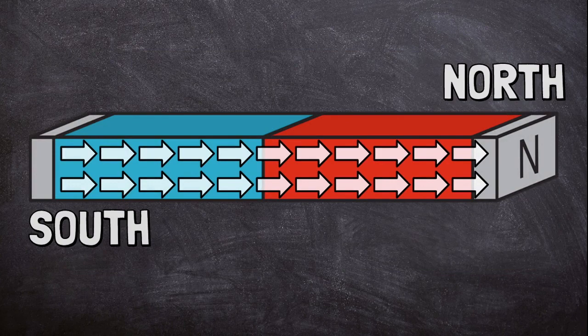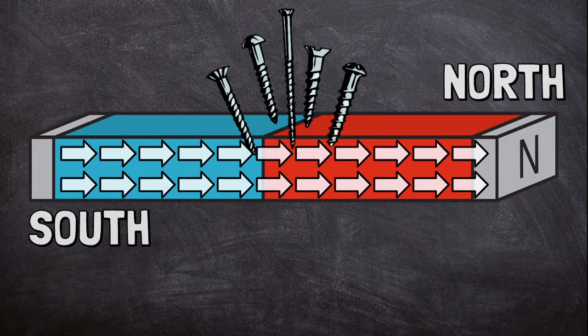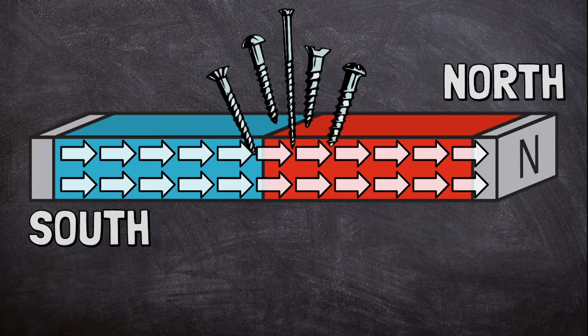When an object is magnetized, it attracts ferromagnetic metals like iron, nickel, and cobalt inside its magnetic field.